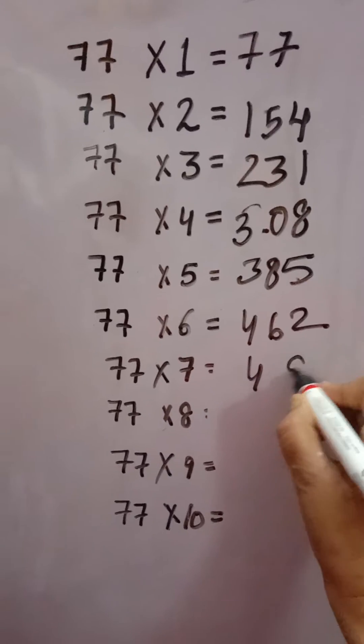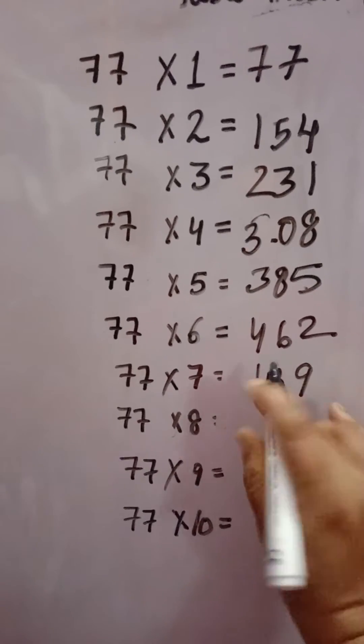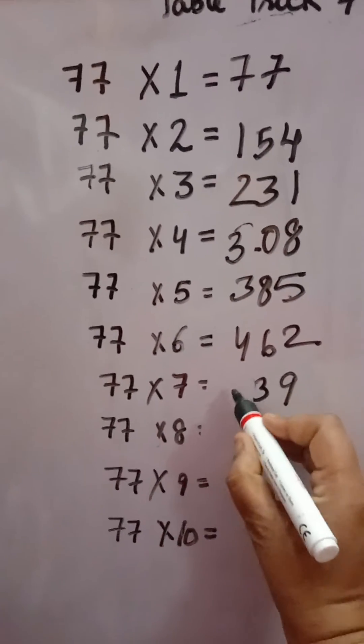7 times 7 is 49, 4 plus 9 equals 13, carry 1, so 539 will come.